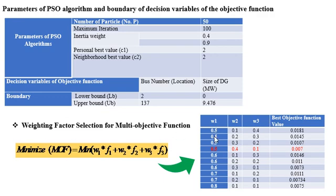This table evaluates different combinations of weight factors for the objective function. The best combination of weights, which gives the minimum value of the objective function, is 0.007. This weight value is then used to convert the three objective functions into a single objective function for optimization.